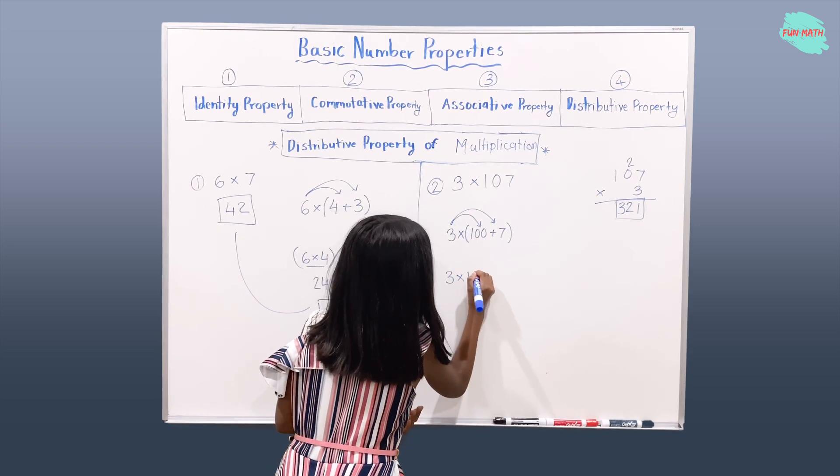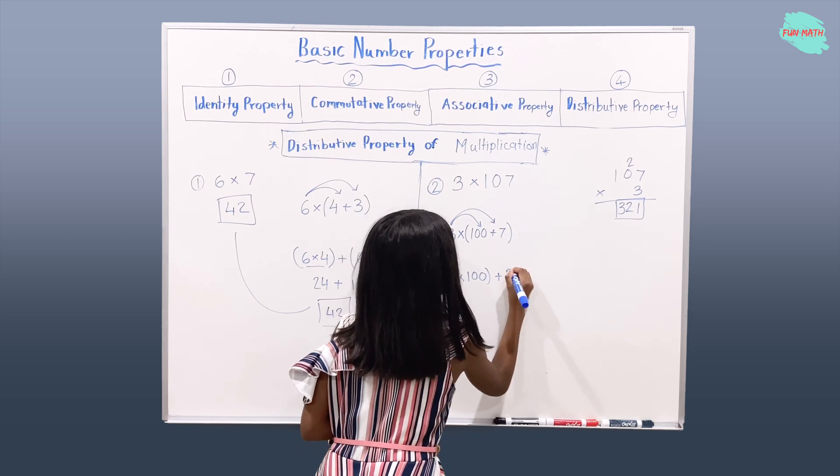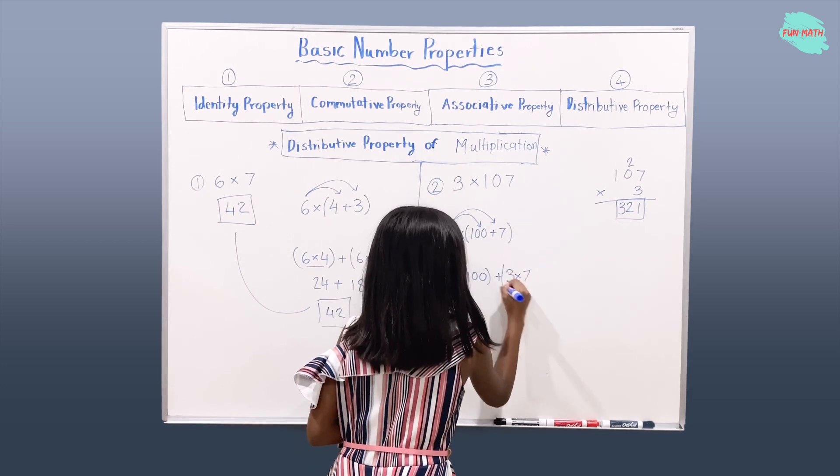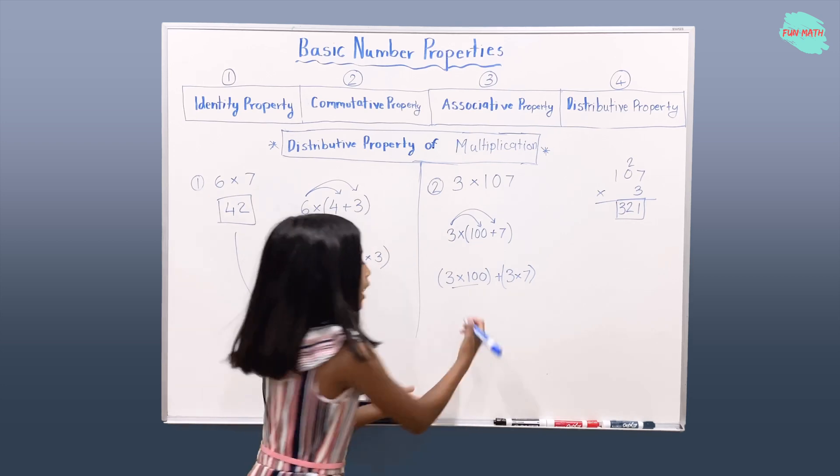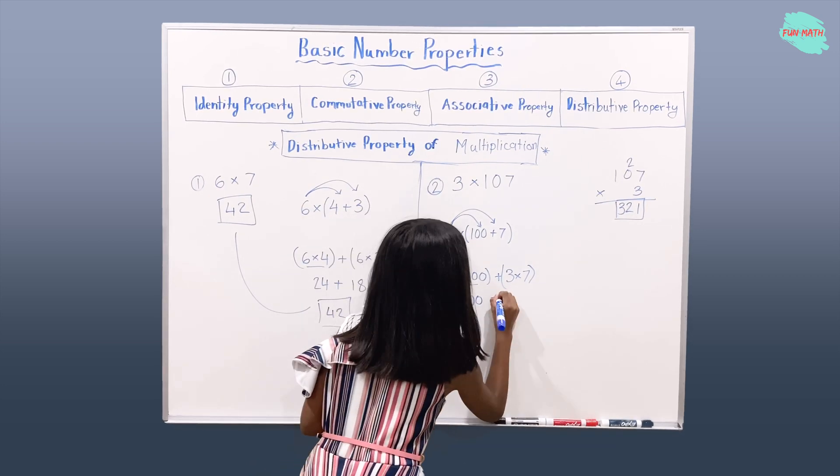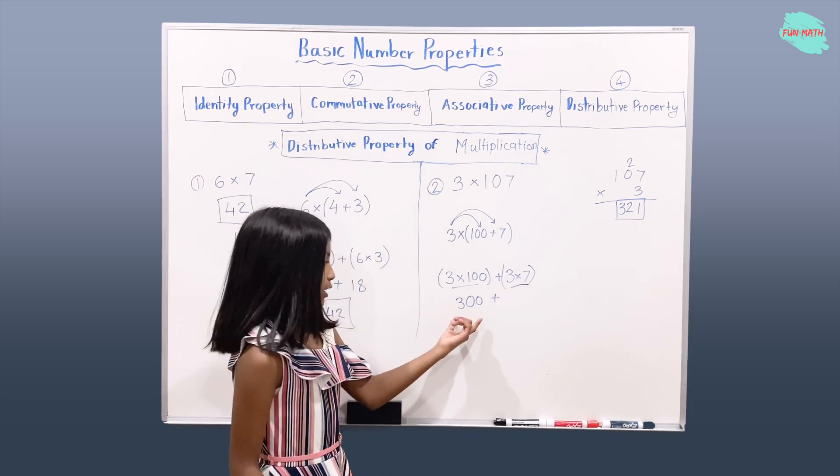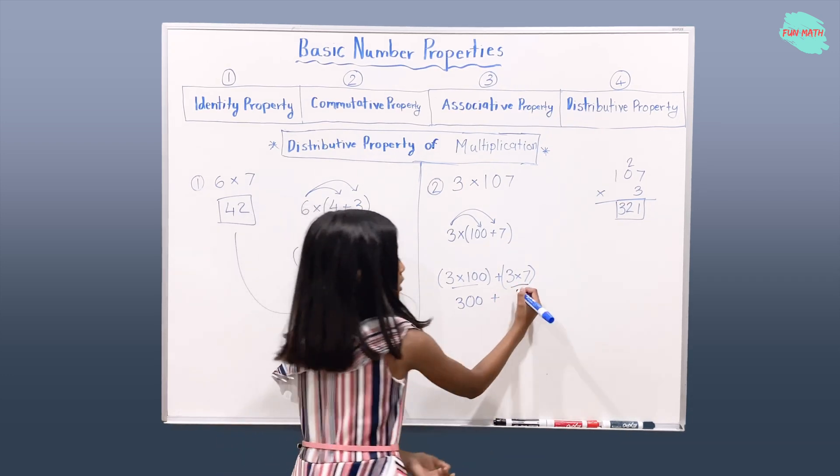3 times 100 in parenthesis plus 3 times 7 in parenthesis. Now, if you multiply this, you should get 300. Then you will add this multiplication by 300. 3 times 7 is 21.